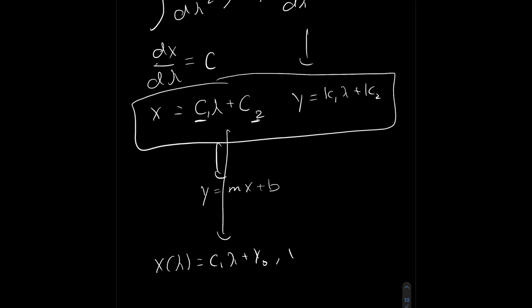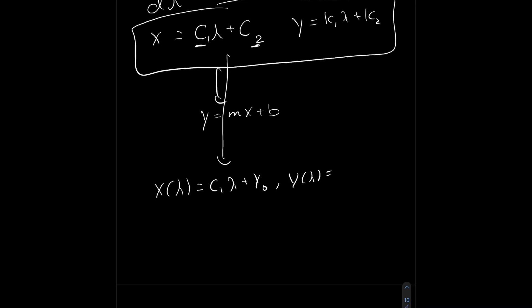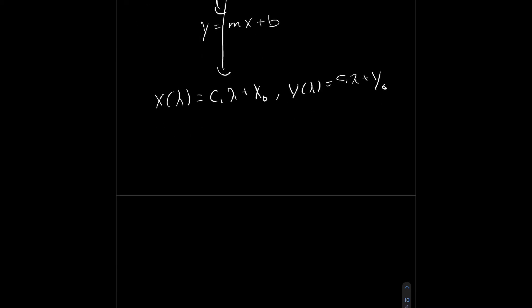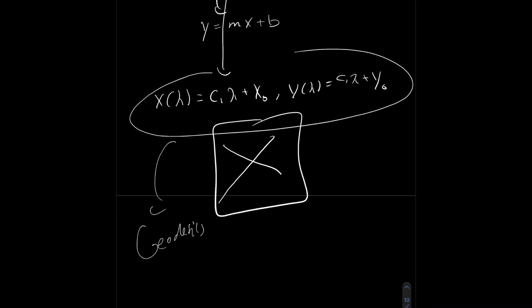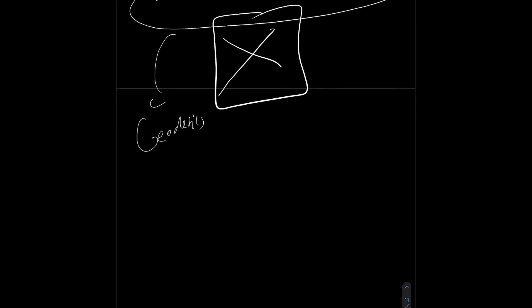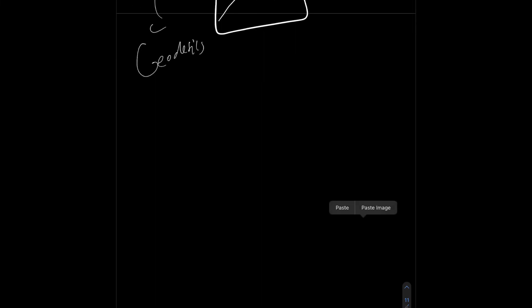So, we could just relabel this as x(λ) equals c1 lambda plus the starting x value. Same thing with y. And these just give us equations for straight lines. These are the geodesics along our space, and they give us straight lines, which align with our intuition.